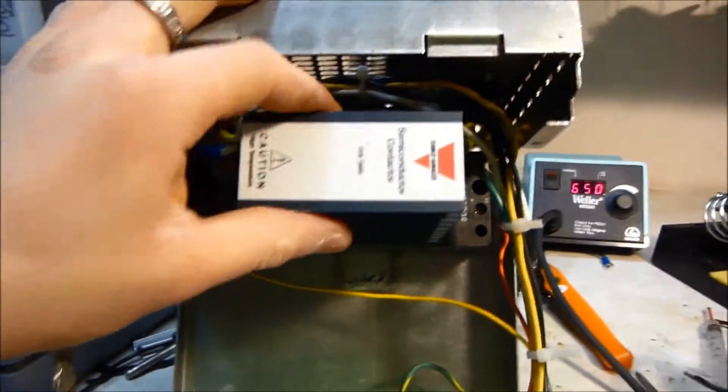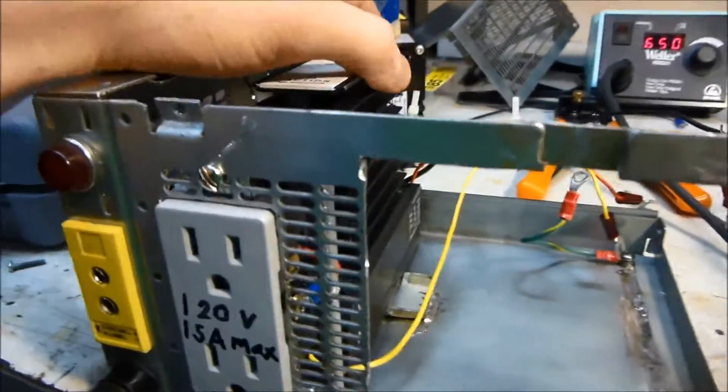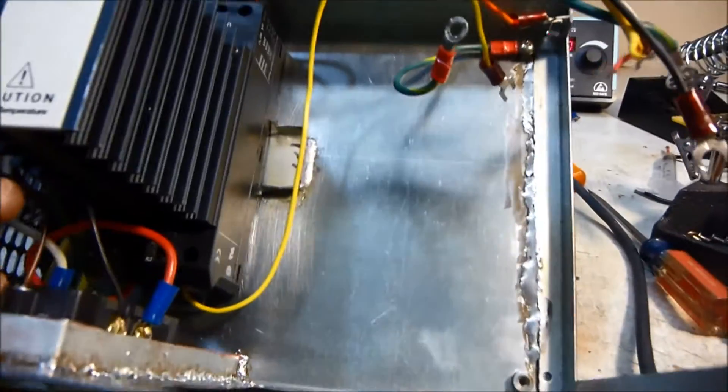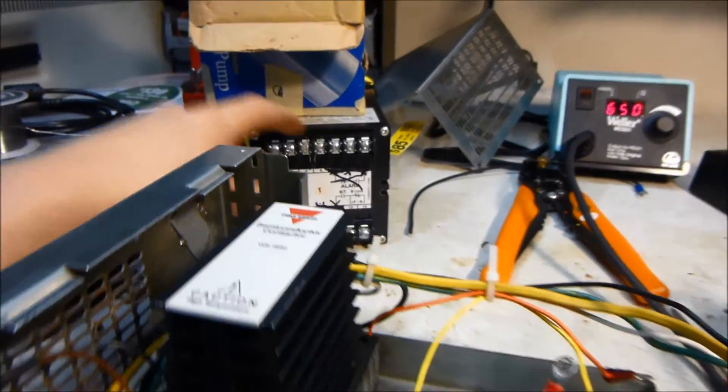The contactor though, that is actually brand new. It was still in the box and my dad's work was throwing it away, so I grabbed that because I could use that for something. I got that for free. The temperature controllers, those were used as well, but they're in pretty good condition.